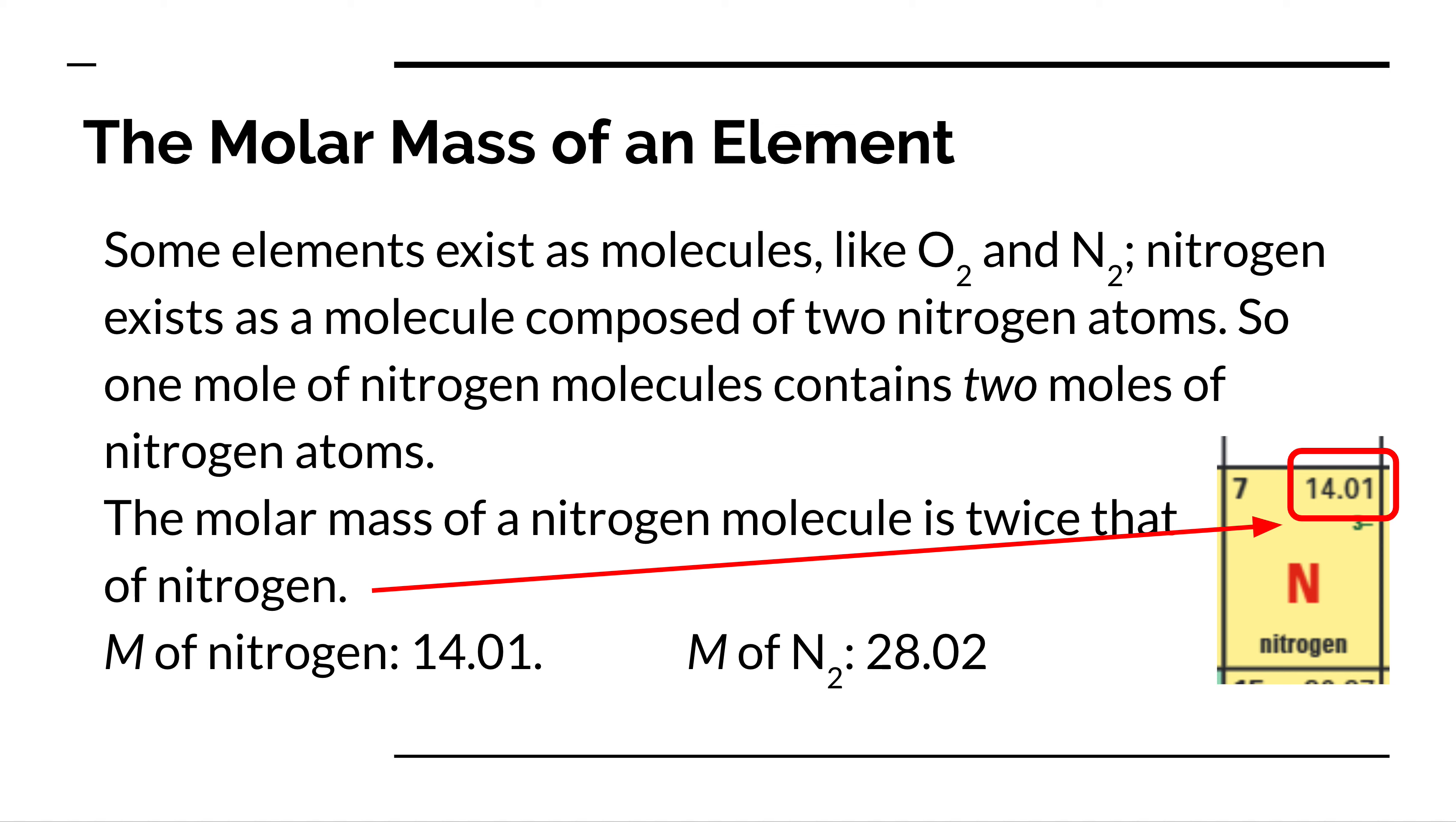Important thing to remember as well is that some elements only exist as diatomic molecules. So for nitrogen or oxygen, the molar mass of nitrogen is 14 and one hundredths of a gram per mole. But nitrogen gas isn't just nitrogen on its own. Nitrogen gas is not N, it's N2.